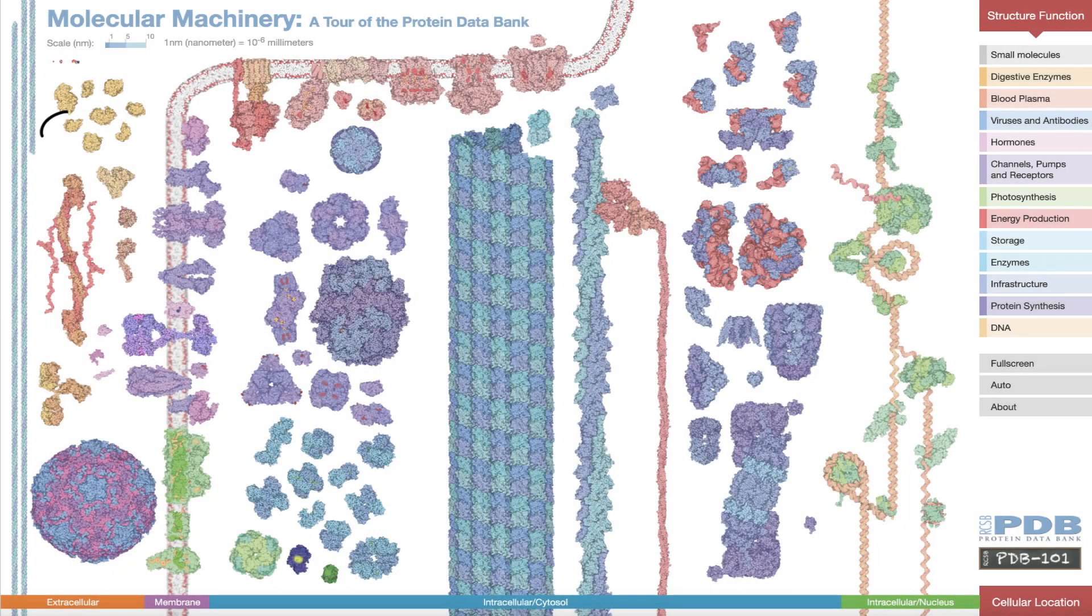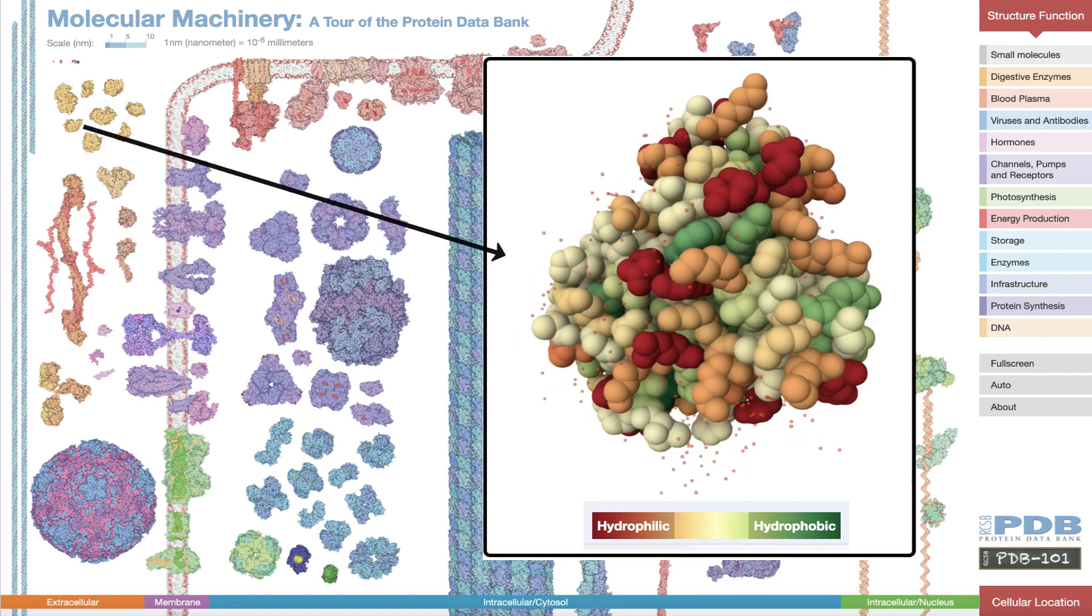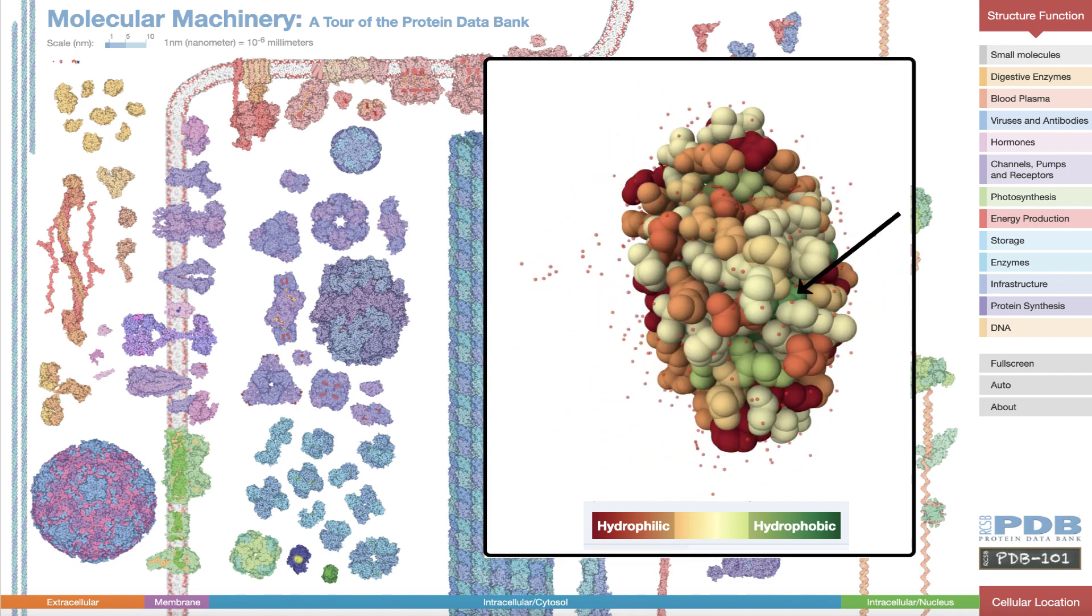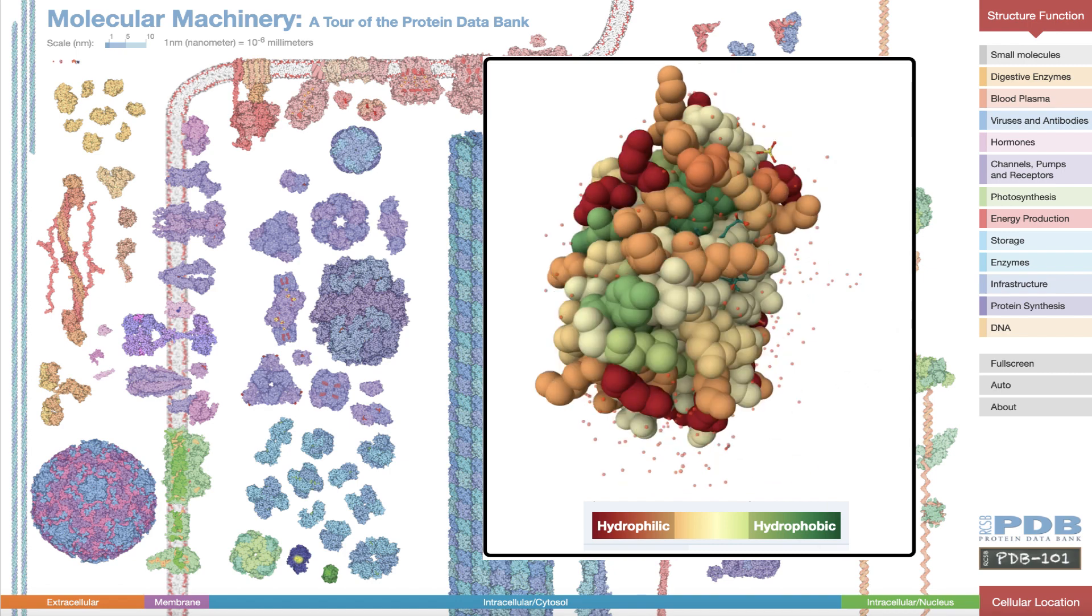For example, small globular proteins in an aqueous environment usually have their hydrophobic amino acids tucked in the core of the protein.